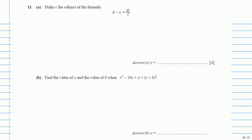Now we have arrived at the last question of this paper 4, which is question number 11. Part (a): make x the subject of the formula, which is (a - x) equals xr over t.